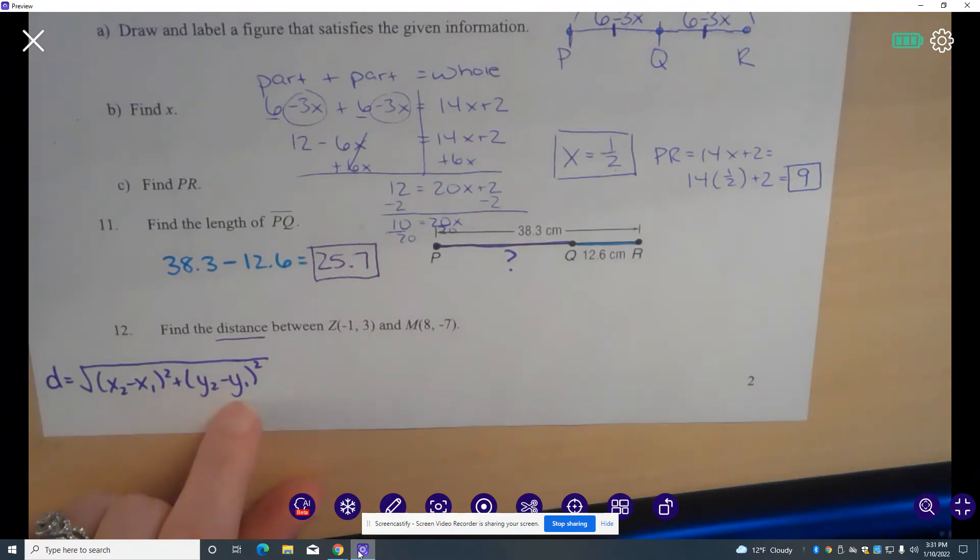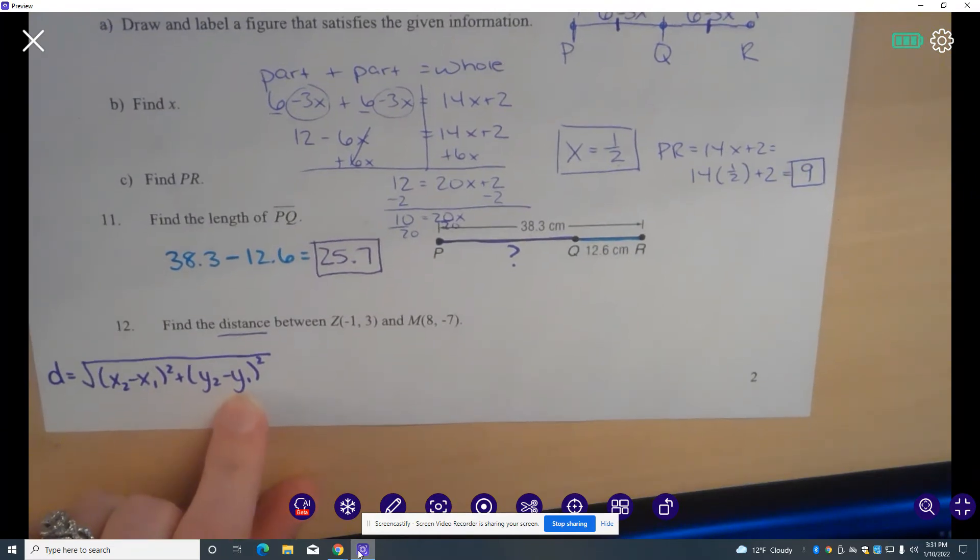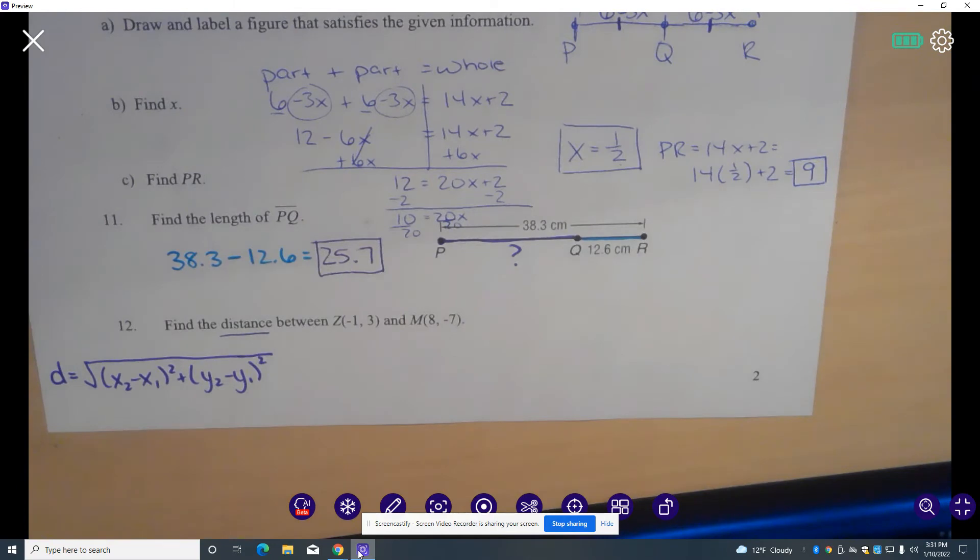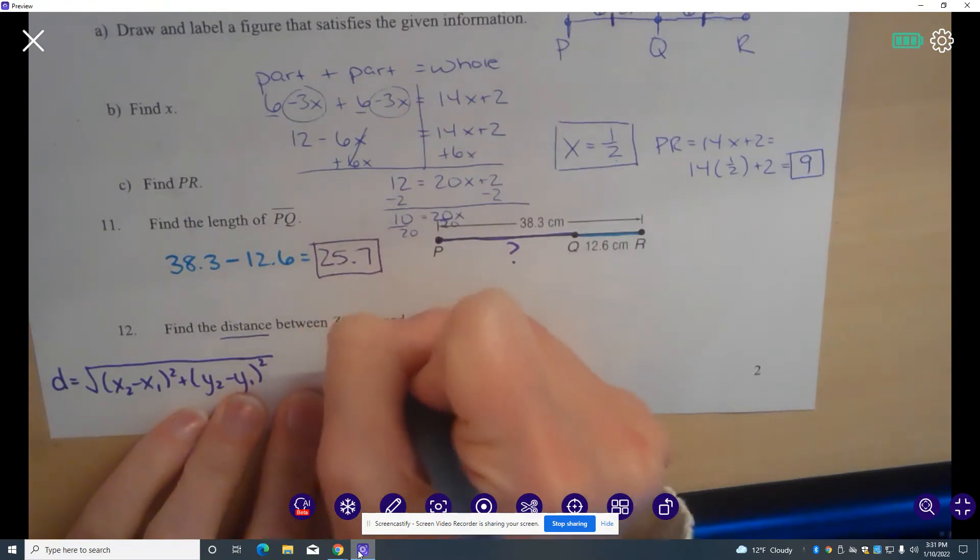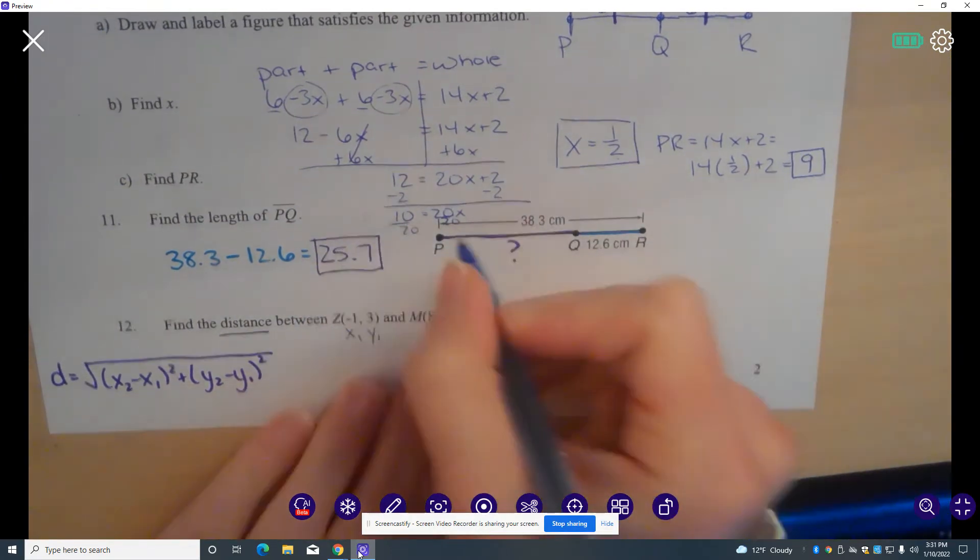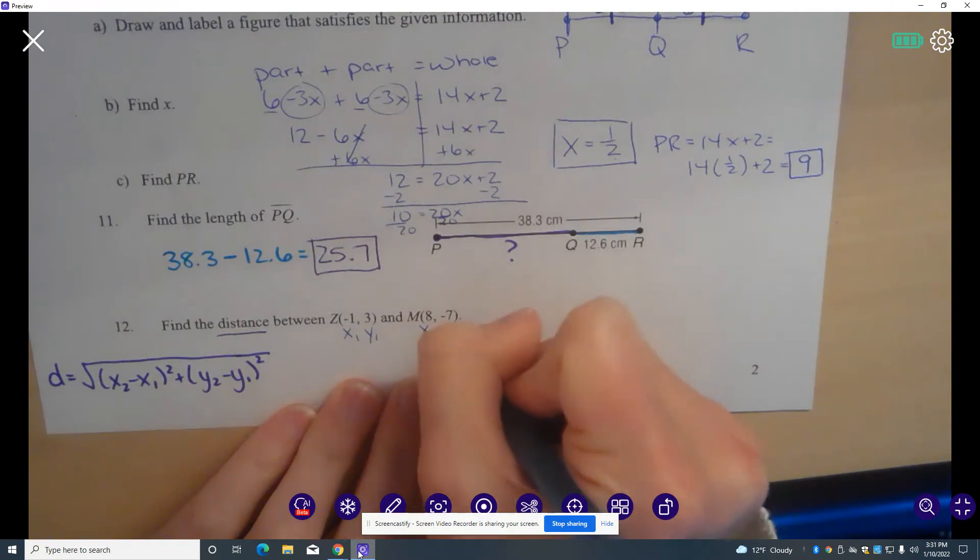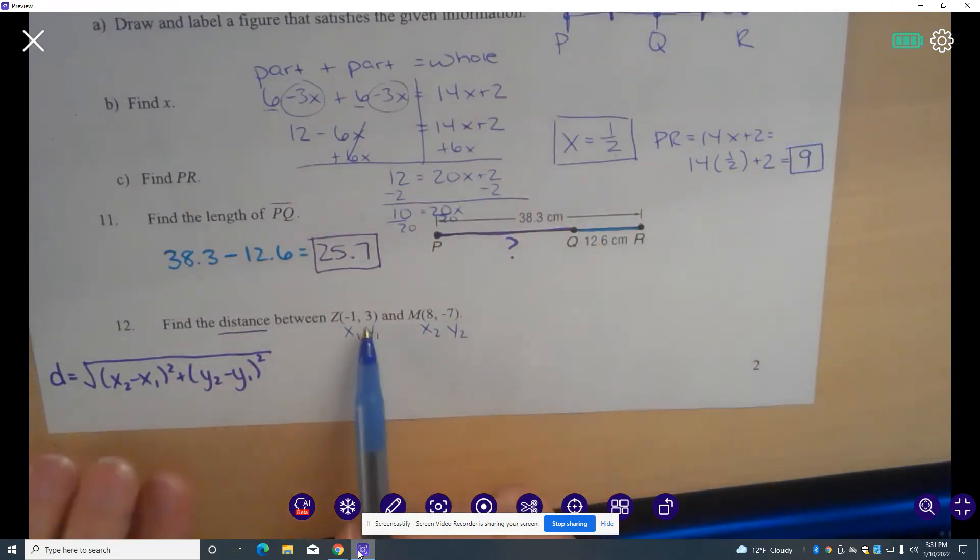This will be given to you on your formula sheet. You just need to know how to use it. So I always recommend that people start by labeling your points. So my first point, I'm going to label X1Y1. My second point, I'm going to label X2Y2. And then I'm going to plug my numbers into my distance formula.